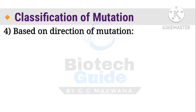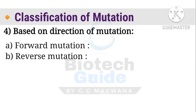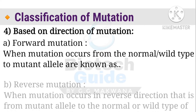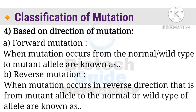The fourth classification is based on direction of mutation, with two types: forward and reverse mutations. When mutation occurs from a normal or wild-type allele to a mutant allele, it is defined as a forward mutation. When mutation occurs in the reverse direction — from a mutant allele back to the normal or wild-type allele — it is defined as a reverse mutation.